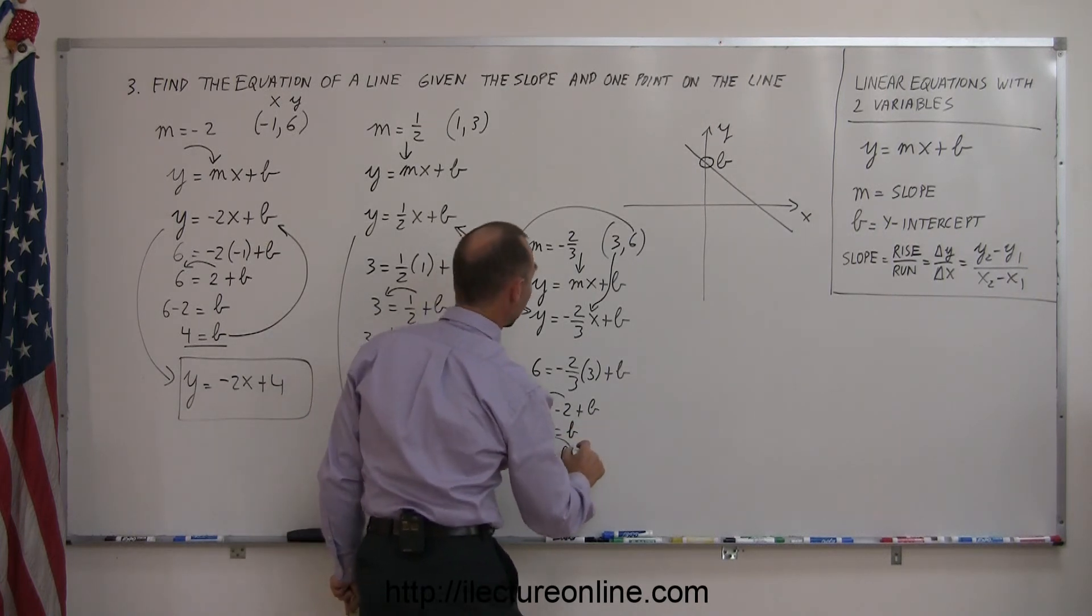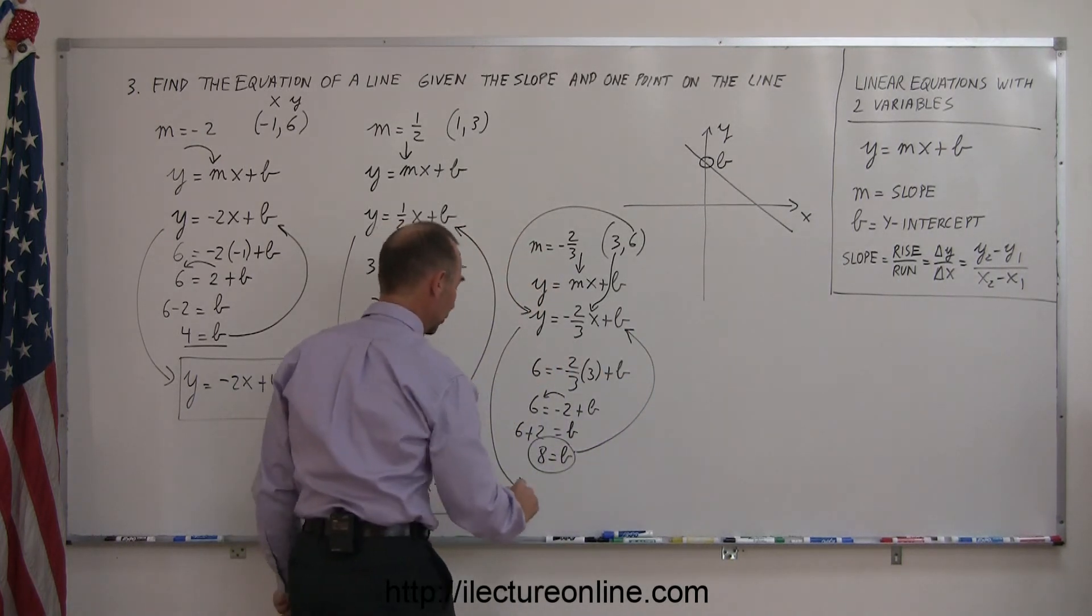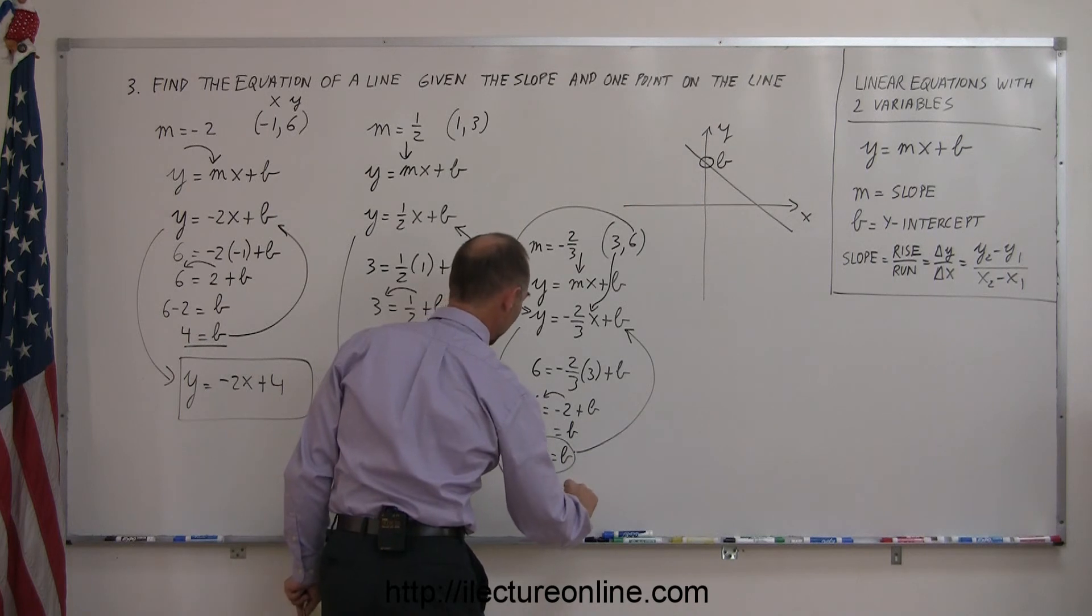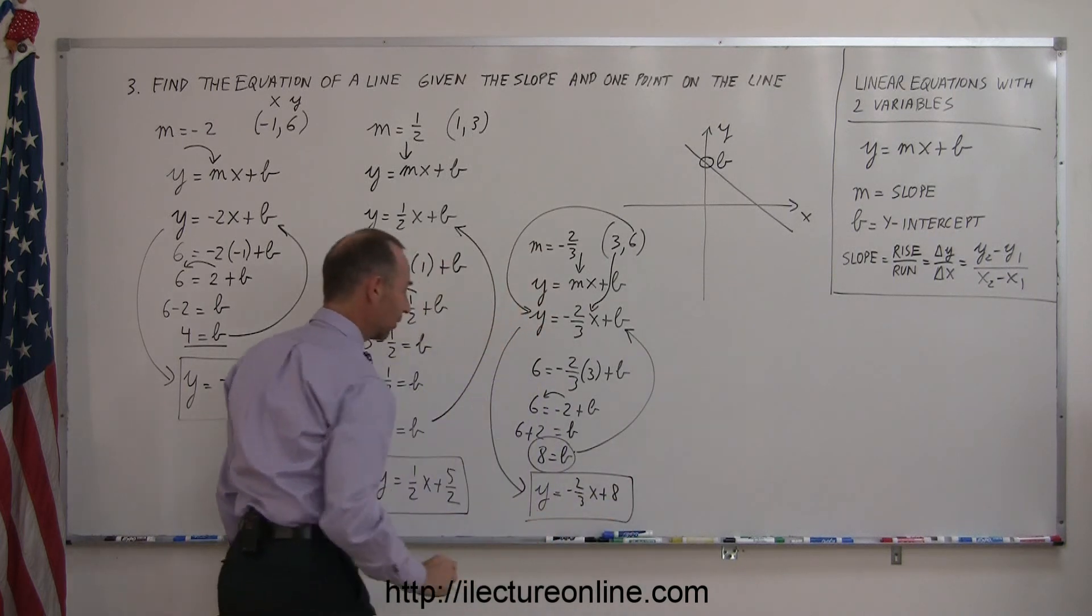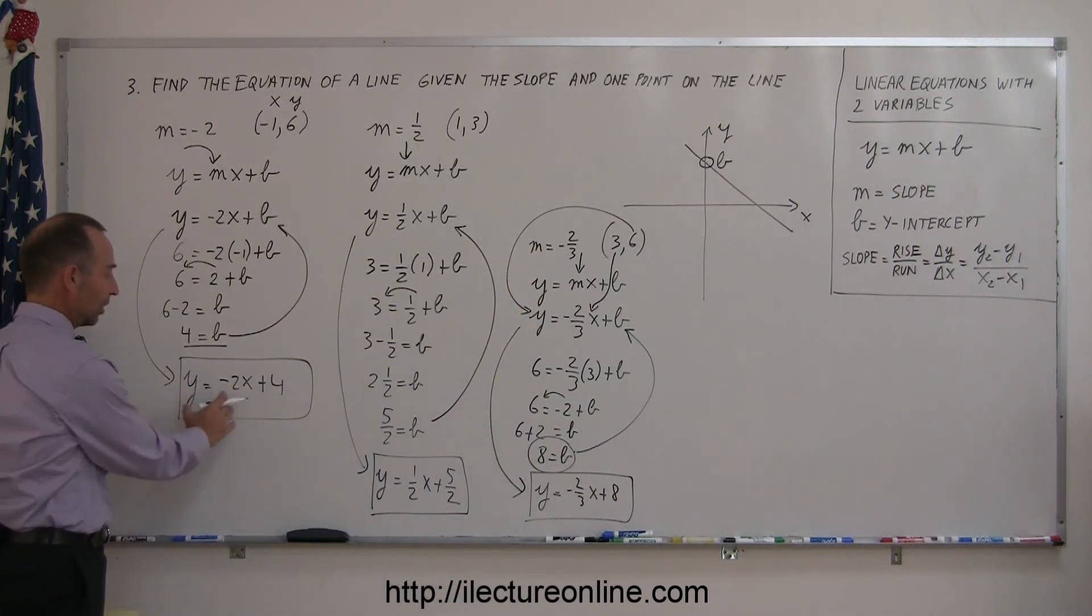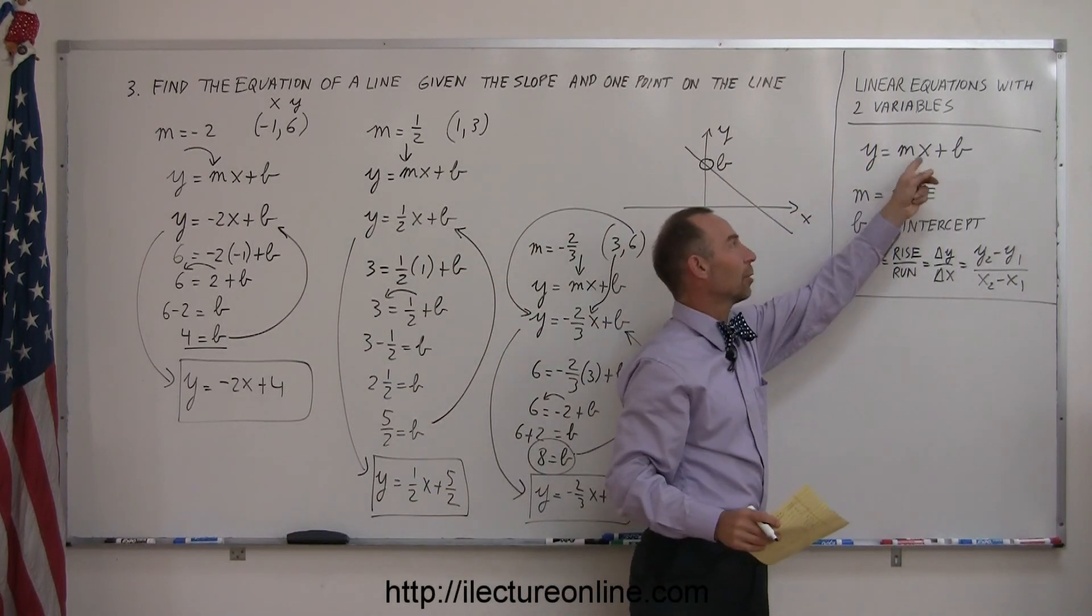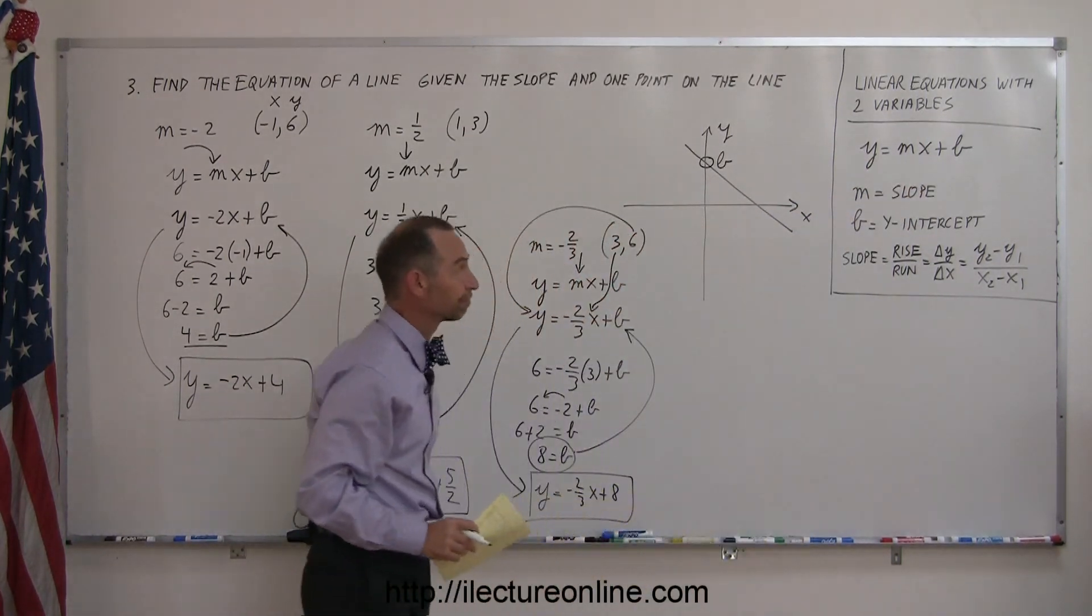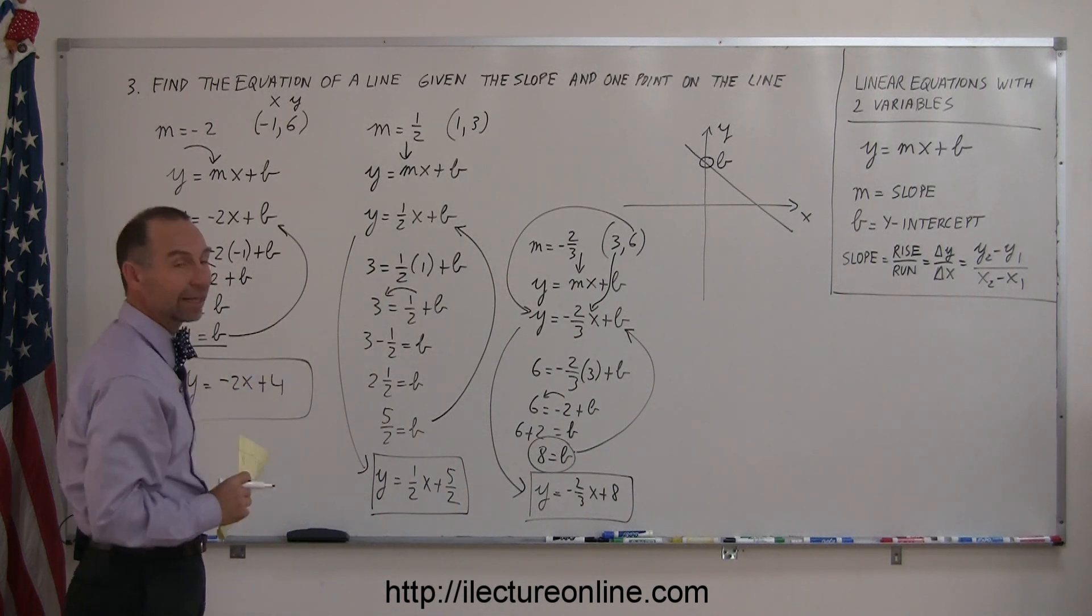Then you plug that back into your equation right here, and that means your equation you're looking for is y equals negative 2 thirds x plus 8. And there's the equation of the line. Notice that the answer in each case is in your general y equals mx plus b, or slope intercept form, as they call this. So not too bad when you do it like this.